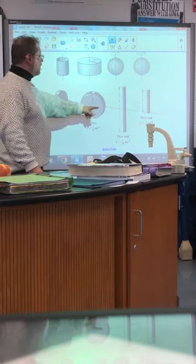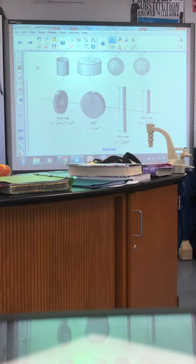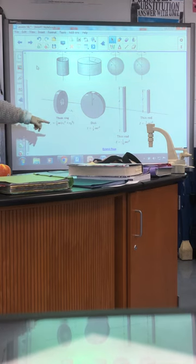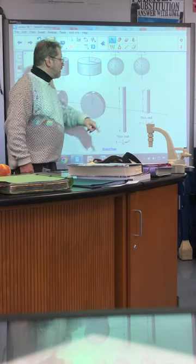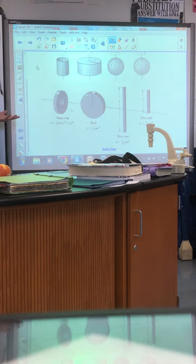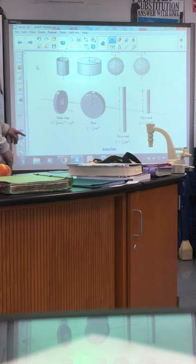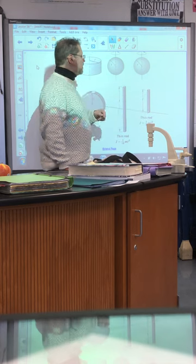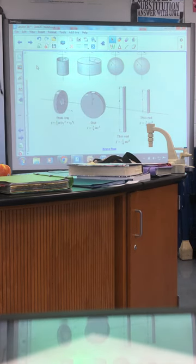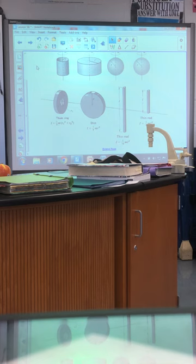Then we have a thin rod, and there are two possible situations. This is the only one that's not using a radius, it's using the length. If it is rotating right through its center, it's one-twelfth ML squared. If you have it rotating about one end, it's one-third ML squared. So really all we're doing is we're replacing individual particles that are rotating with the shape that is rotating, and it's going to be rotating around some axis, usually going through.